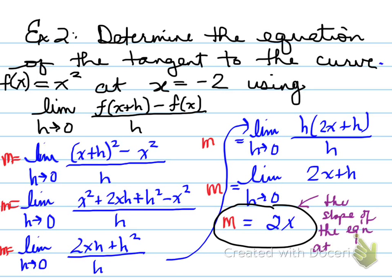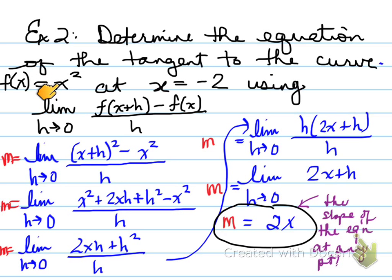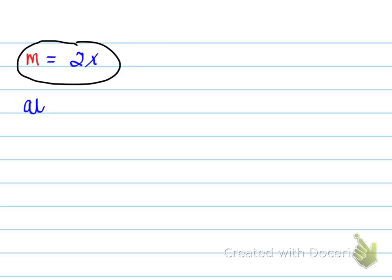So m = 2x is the slope equation for any point along the parabola x². Now we need the slope specifically at x = negative two. Plugging in: m = 2(−2) = −4. So the slope of the tangent line at x = −2 is negative four. If you drew a tangent line to the parabola at x = −2, it would have a negative slope of −4.